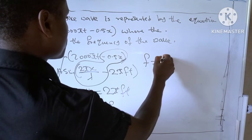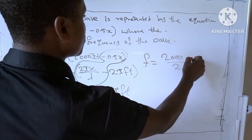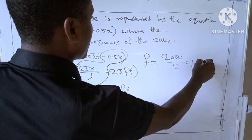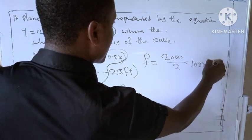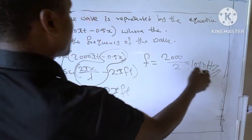So f = 2000/2, which equal to what? 1000 Hz. Are you getting it? So this is the answer.